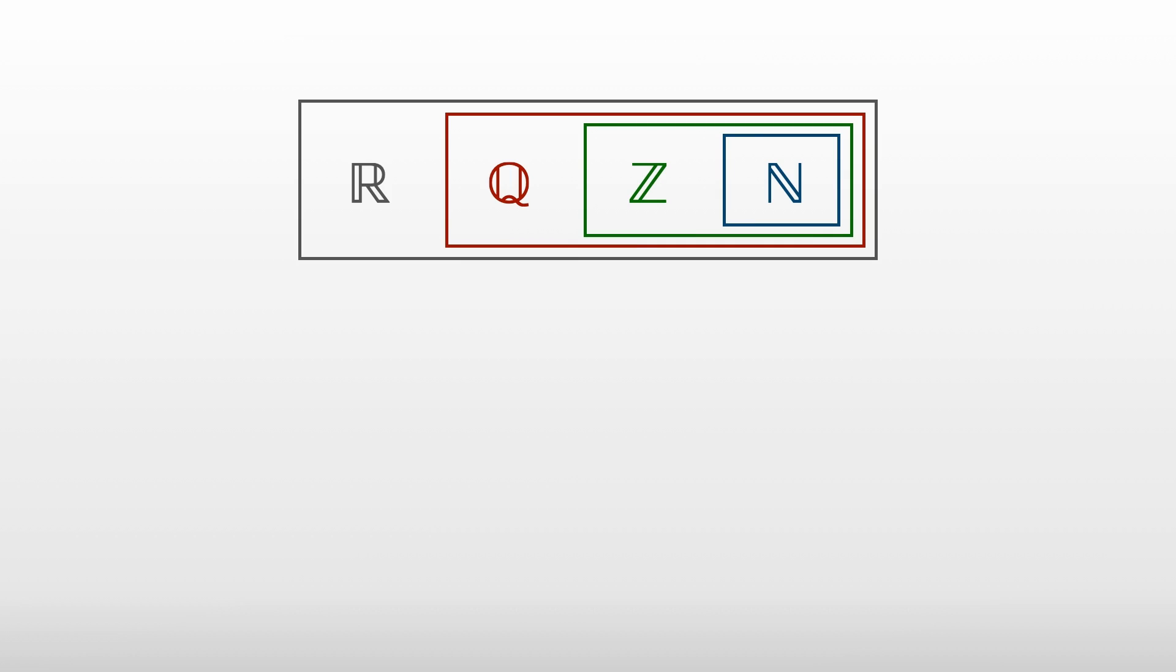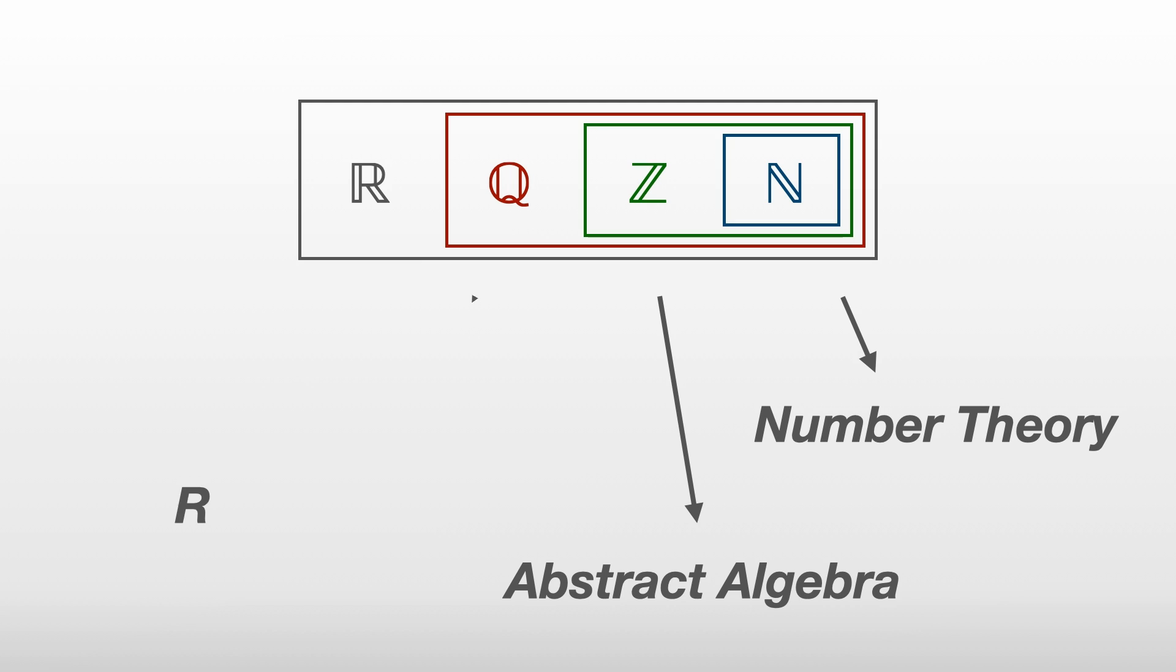The various characteristics of numbers we've talked about in this video will come up time and time again in your maths journey. For example, the study of natural numbers leads to number theory, the study of operations on each of these sets leads to abstract algebra, and the characteristics of real numbers, namely completeness, leads to real analysis and is the foundation of calculus.